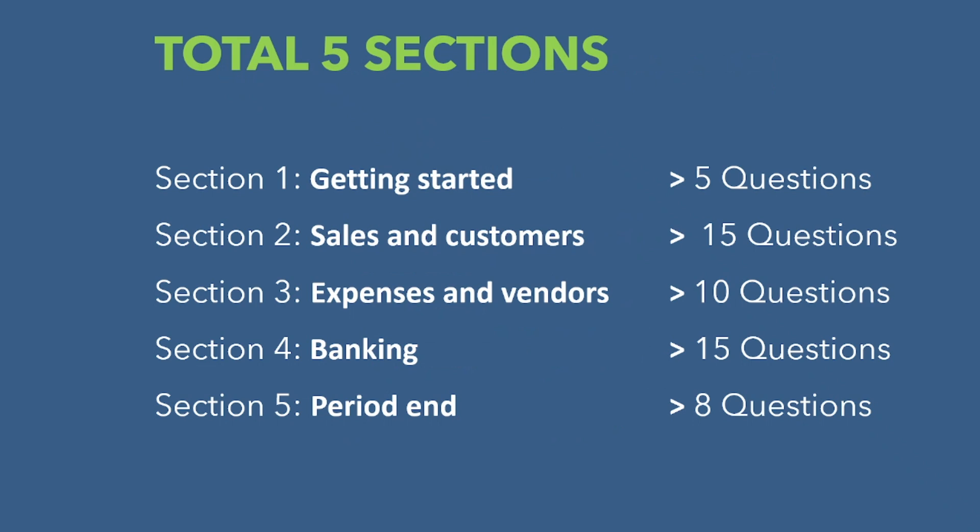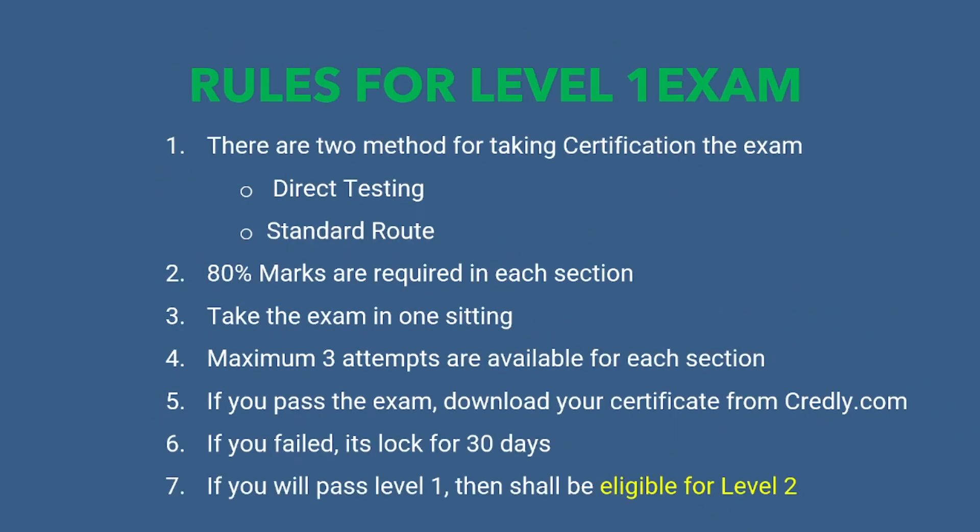There are a total of 5 sections in this exam and 10 questions shall be asked in Section 3, Expenses and Vendors. There are two methods to take the certification exam: direct testing and standard rules. 80% marks are required for each section. Take the exam in one sitting. Maximum 3 attempts are available for each section. If you pass the exam, download your certificate from CalD.com. If you fail, it will be locked for 30 days, then you shall be eligible to take your exam again. If you pass Level 1, you shall be eligible for Level 2 certifications.